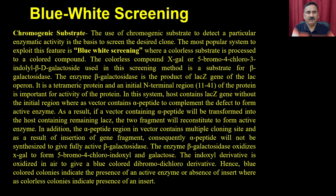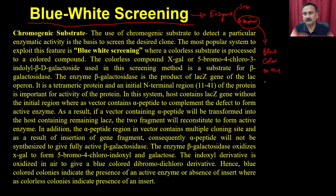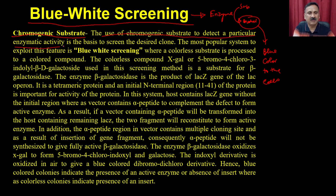The first method we are going to discuss is the blue-white screening, where you use an enzyme to convert the substrate into the product, and this product gives a blue color to the cell. It uses a chromogenic substrate — the use of a chromogenic substrate to detect a particular enzymatic activity is the basis to screen the desired clone.